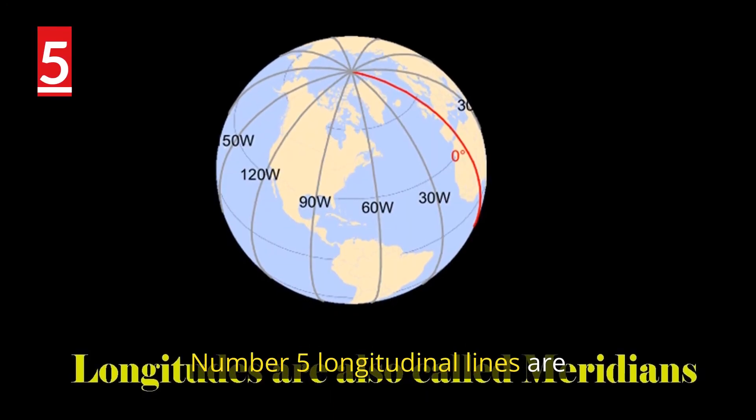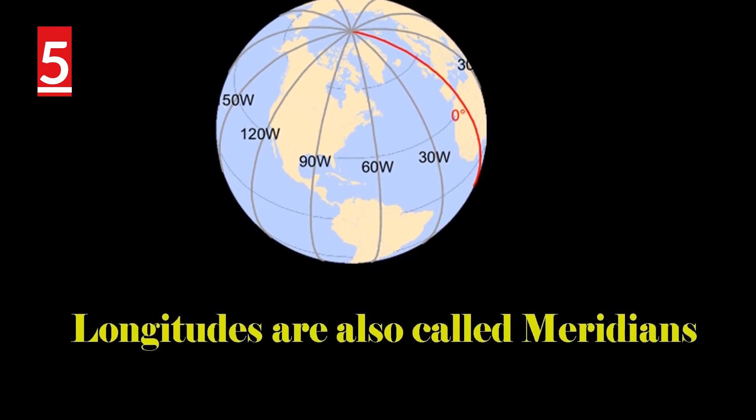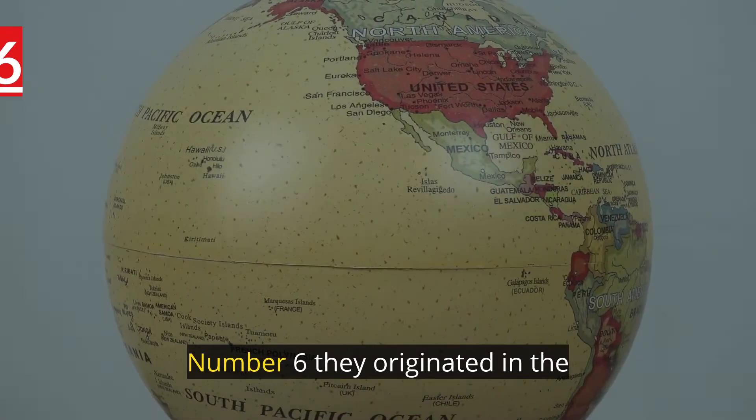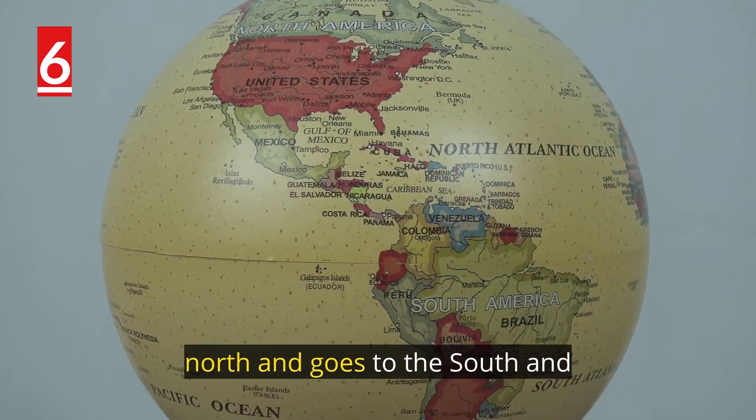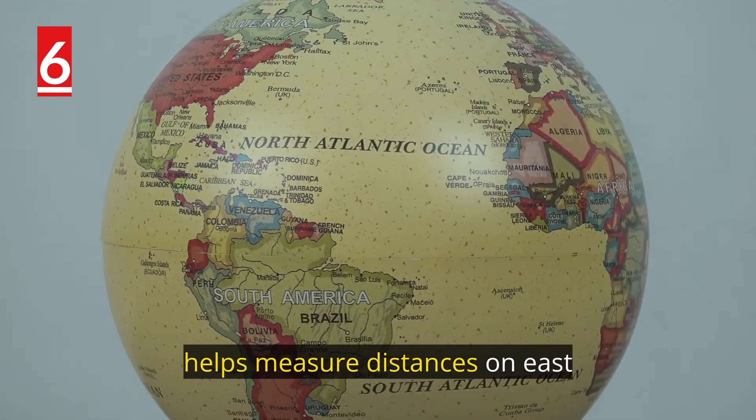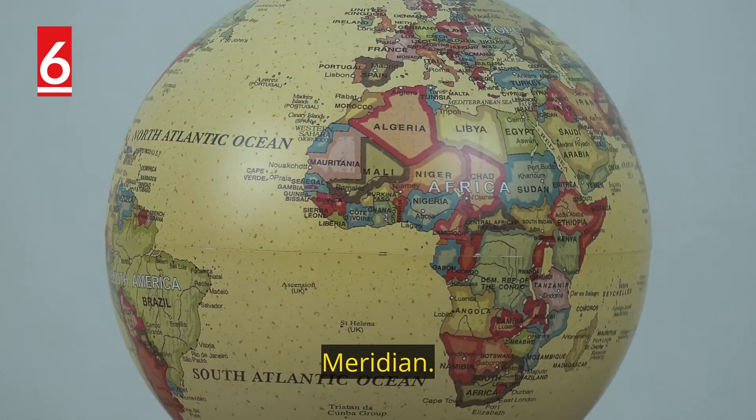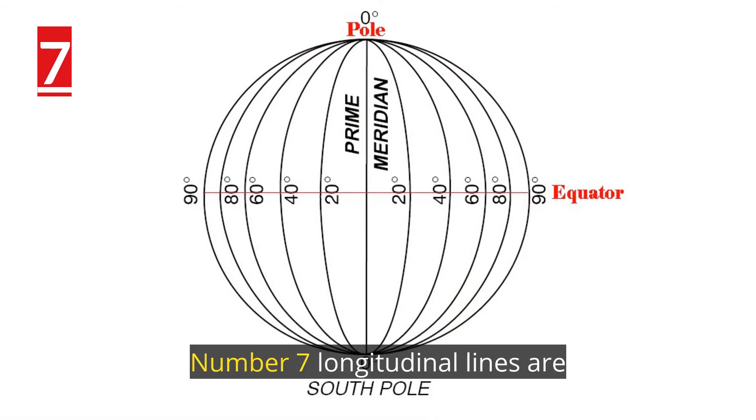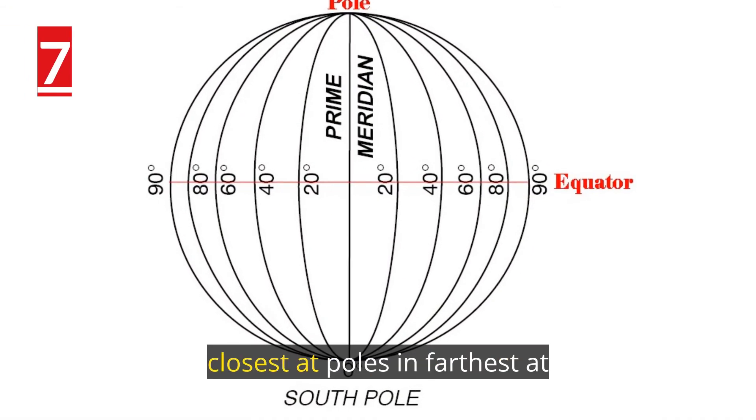Number five: longitudinal lines are also called meridians. Number six: they originate in the north and go to the south, and help measure distances on east and west from the Prime Meridian. Number seven: longitudinal lines are closest at poles and farthest at the equator.